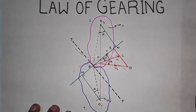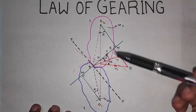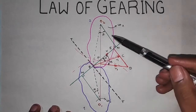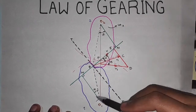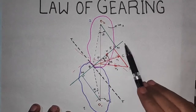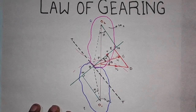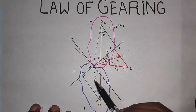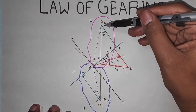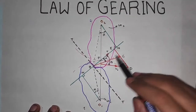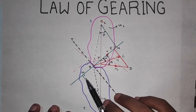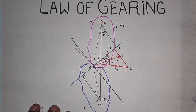The point of contact is Q. Now from the centers O1 and O2, draw lines O1M and O2N, which are perpendicular to the line MN. O1M is a perpendicular from O1 to MN, and O2N is a perpendicular from O2 to MN. Both of these are perpendicular, as shown by the symbols in the figure.